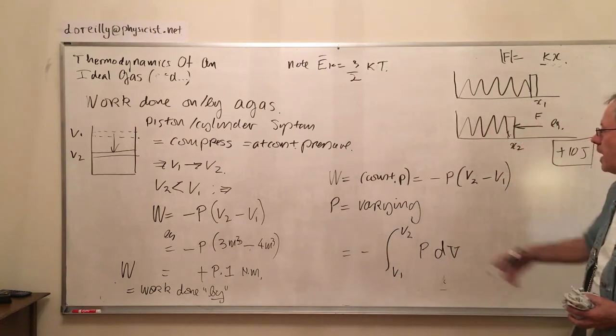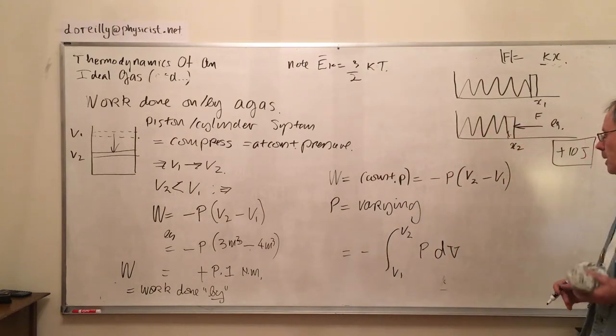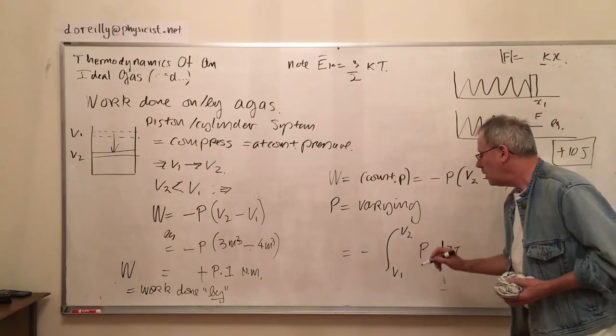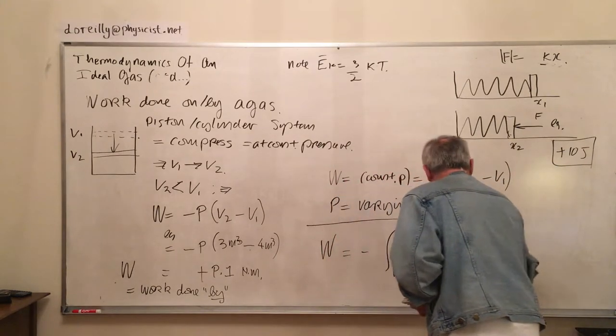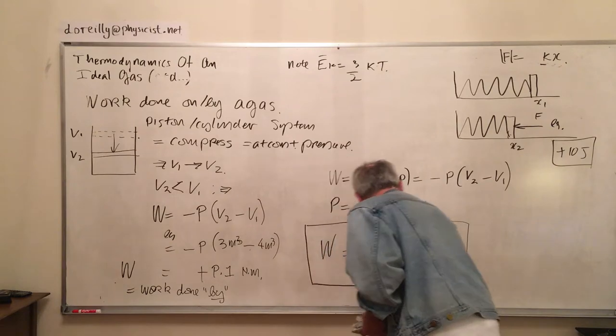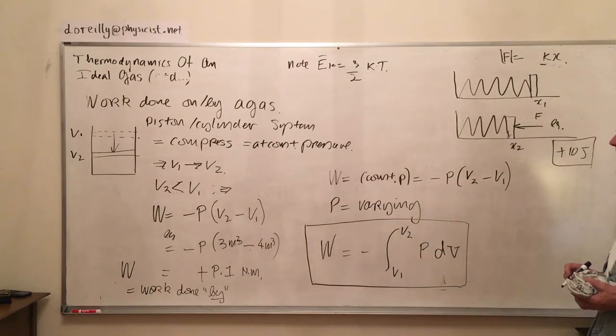Now if I want to vary the pressure, if the pressure is varying between V1 and V2, more generally, we say that the work done on the gas is given by the integral V1 to V2 of P*dV.